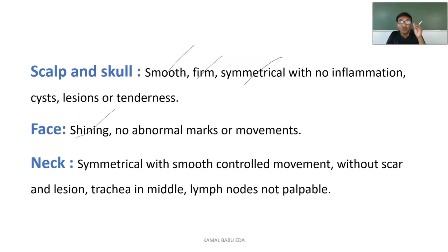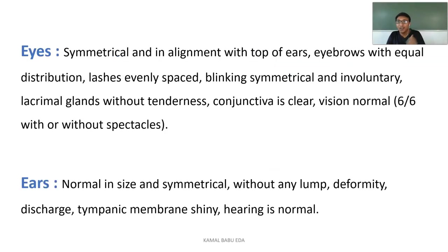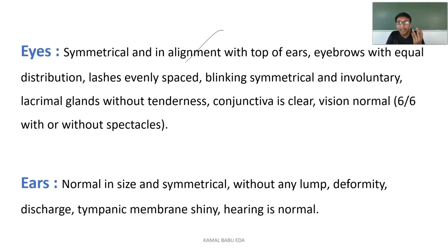When checking the eyes, they should be symmetrical and in alignment with the top of the ears. Eyebrows should be equally distributed, lashes evenly placed, and blinking should be symmetrical and involuntary. Lacrimal glands should be without tenderness, conjunctiva should be clear, and vision should be normal — 6/6 without spectacles. Persons wearing spectacles have a physical defect and are not considered fully healthy by this standard.